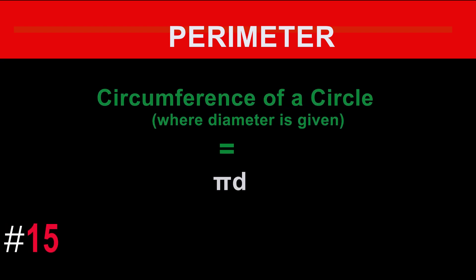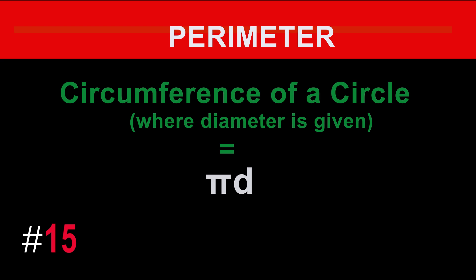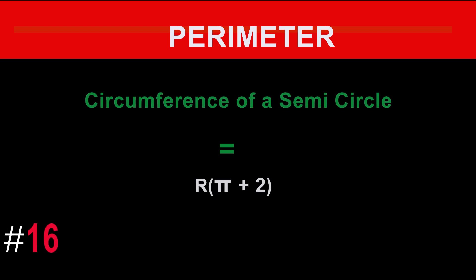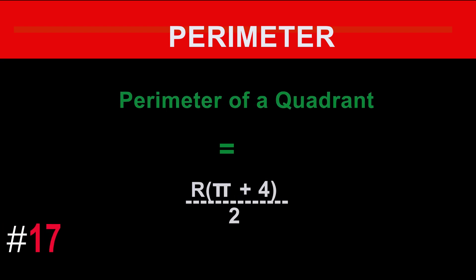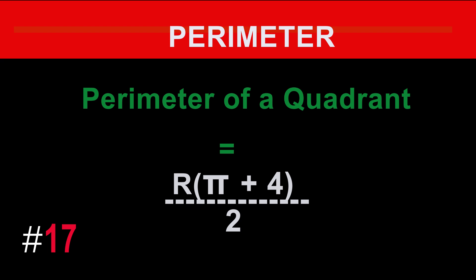The formula for the circumference of a circle where the diameter is given is: circumference equals pi times D. The formula for the circumference of a semicircle is: circumference equals r times (pi plus 2). The formula for the circumference of a quadrant is: circumference equals r times (pi plus 4) divided by 2.